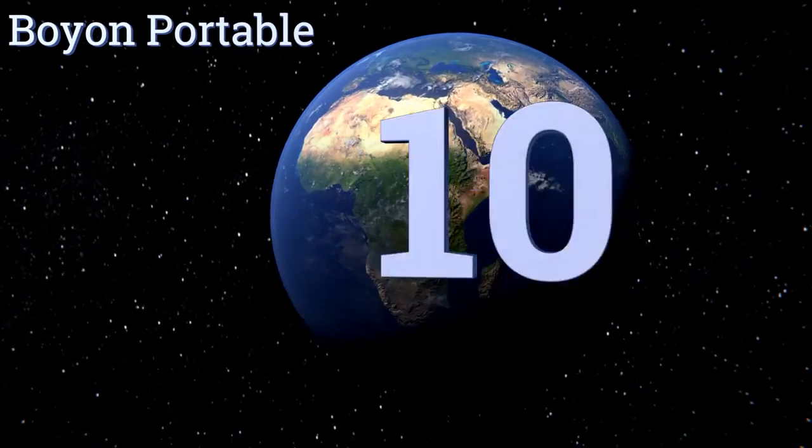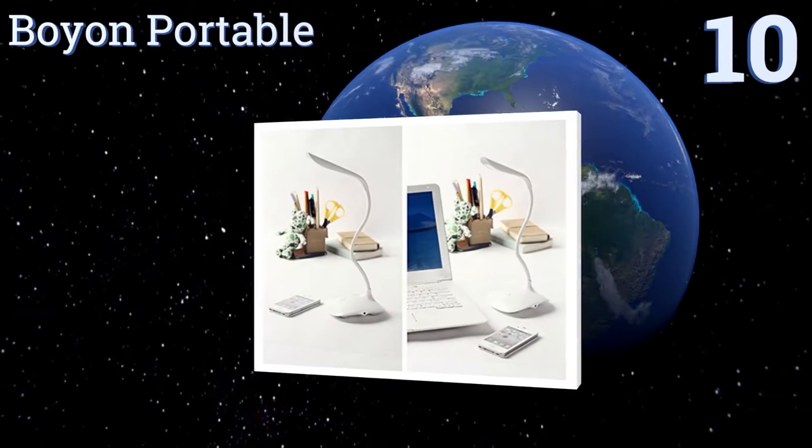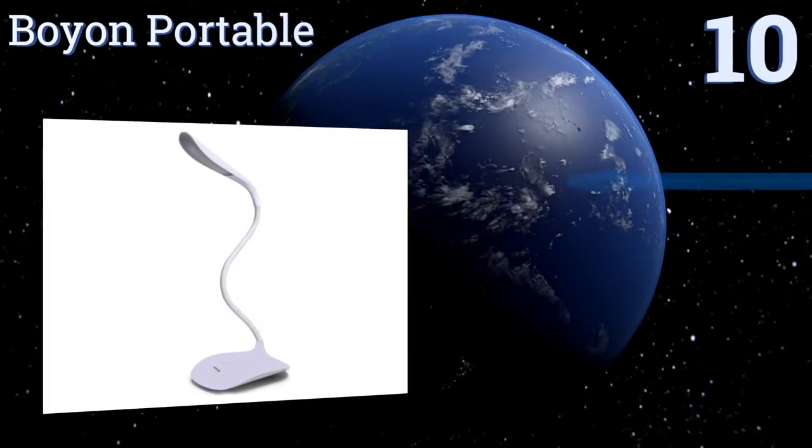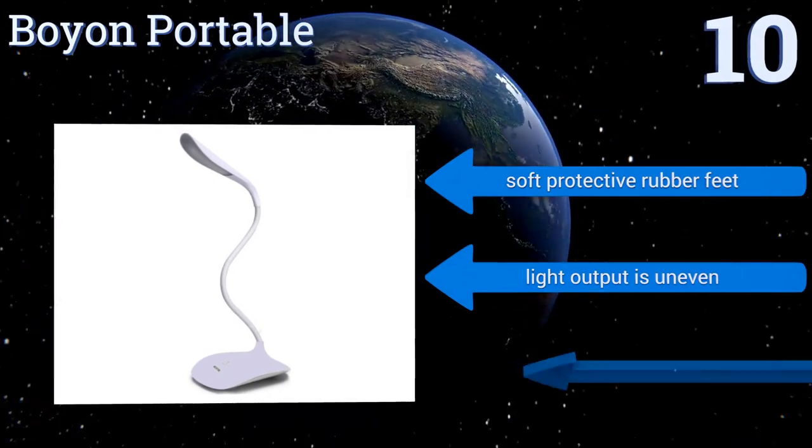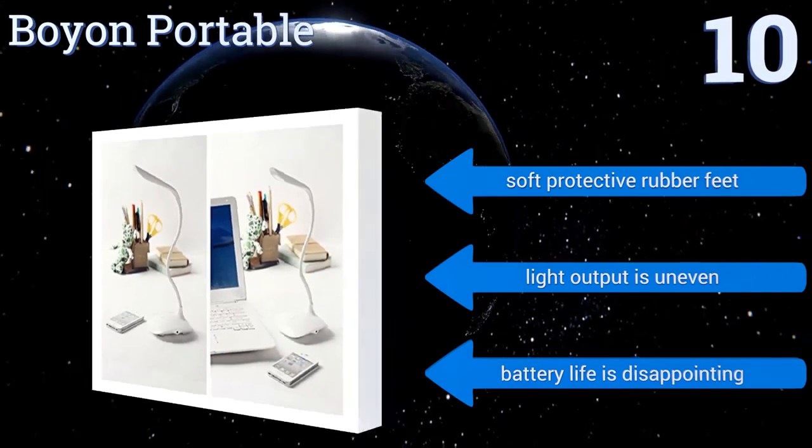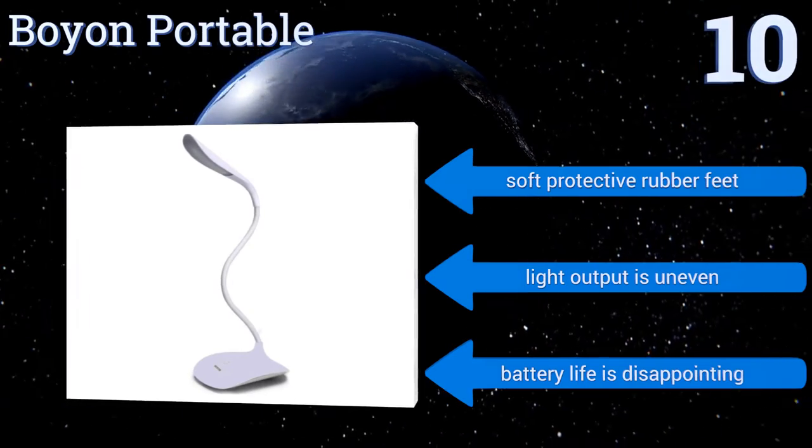Starting off our list at number 10, the Boyon Portable features a modern minimalist style in a user-friendly design. It's extremely thin, recharges via USB, features three brightness settings, and provides a stable and sustainable source of illumination for all your needs. It comes with soft protective rubber feet. However, its light output is uneven and the battery life is disappointing.